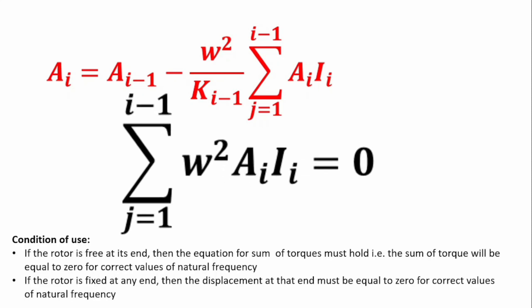Conditions of use: if the rotor is free at its end, then the sum of torques must equal zero for the correct value of natural frequency. The procedure involves guessing a natural frequency, evaluating all amplitudes for the other rotors (with the first rotor set to 1), then finding the sum of torques. If it equals zero, the guess is accurate — this is done iteratively using a computer program.